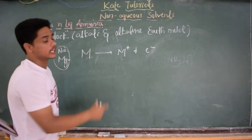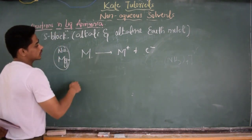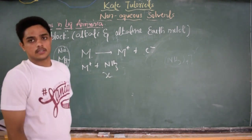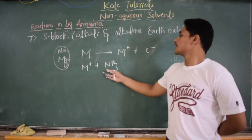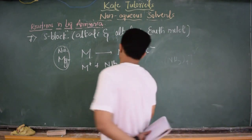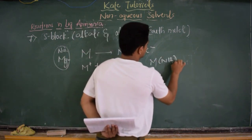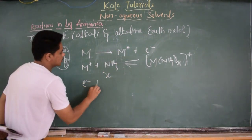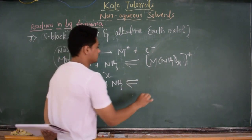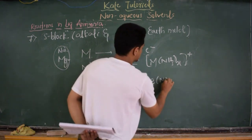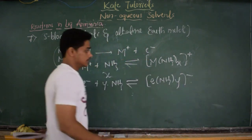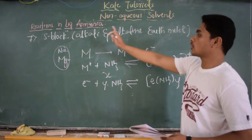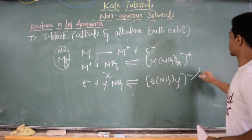They act as good reducing agents with high oxidation potential. This M+ ion reacts with X moles of ammonia to form [M(NH3)x]+, a complex ion. This electron also reacts with Y moles of ammonia to form [e(NH3)y]−. Because of this free electron, the solution is blue in color and conducts electricity.